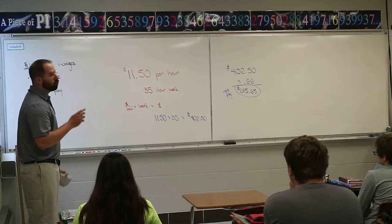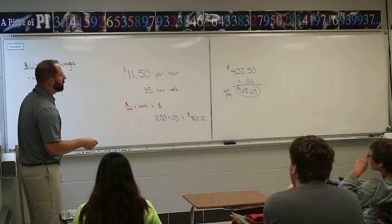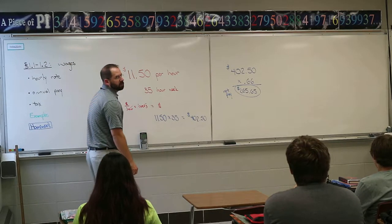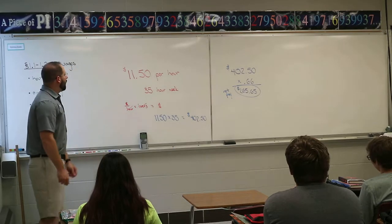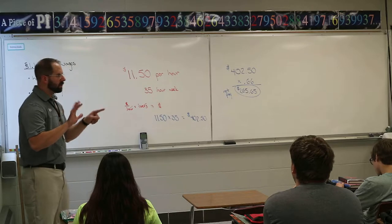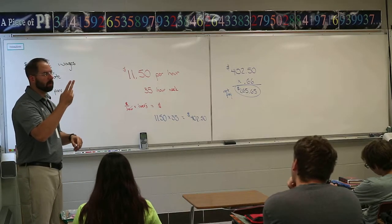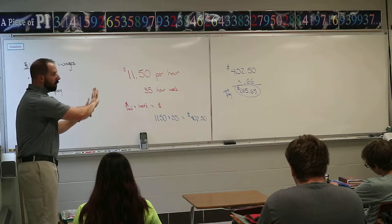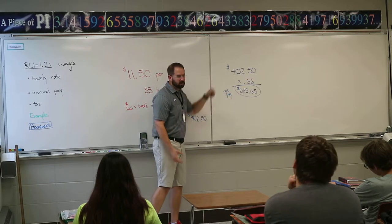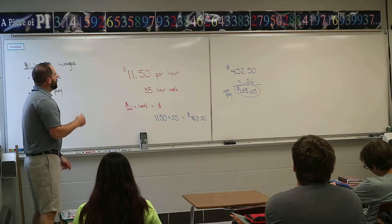These are grossly simplified numbers — that 0.66 is a rough estimate of what you're taking home, but it's pretty close. For the first set of homework problems, you have six of them. You need to calculate your gross pay and your net pay after taxes, and show both numbers. You'll just need a calculator.